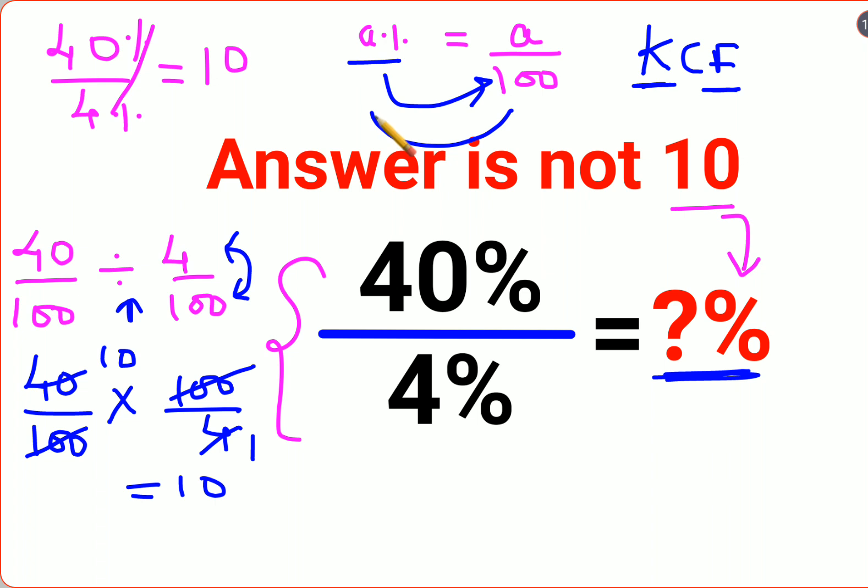Now you have a number and you want to convert it into a percent, you need to multiply by 100. So your final answer will get multiplied by 100. So here this comes out to be 1000%.